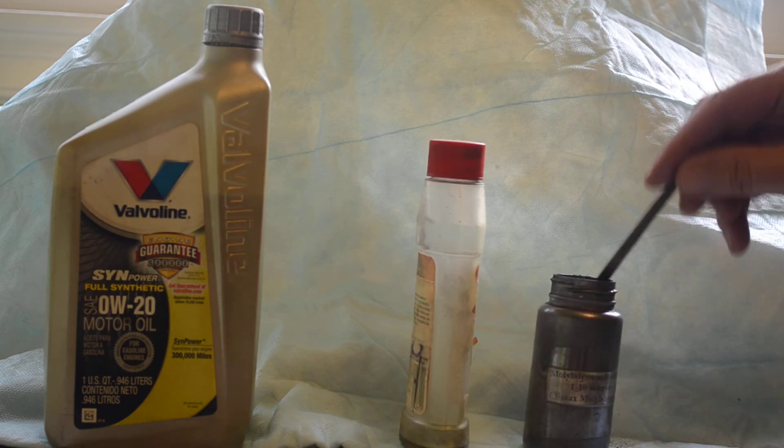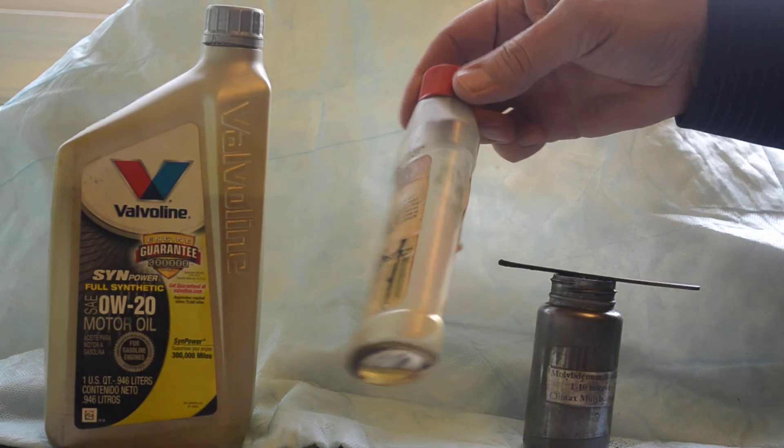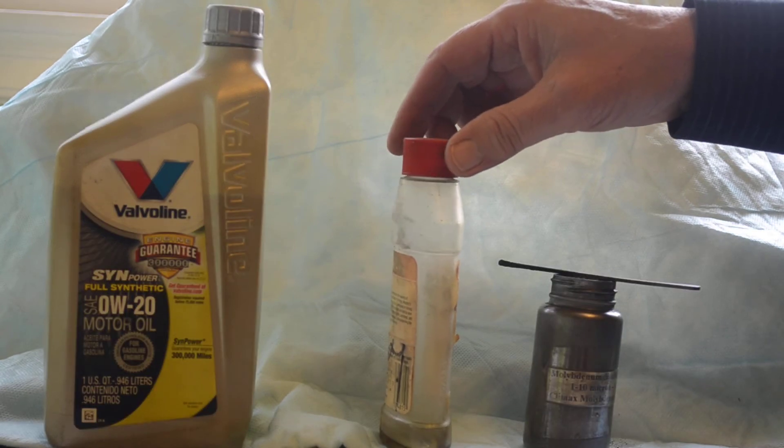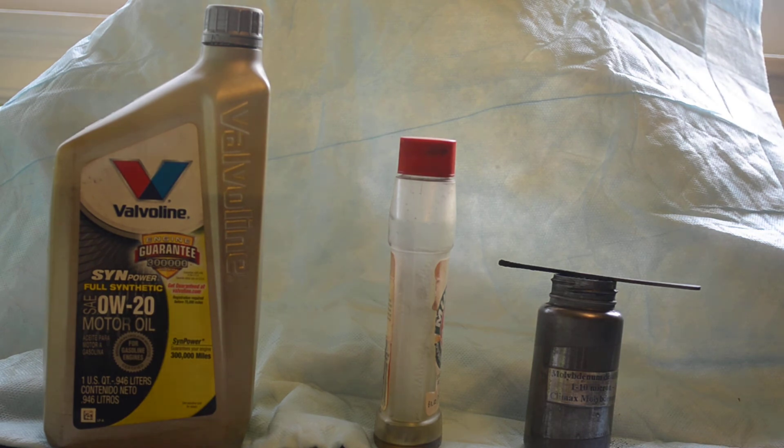What you do is you take that molybdenum and put it in a shaker jar. That's all this is, a shaker jar. I'll take diesel fuel or something that will mix with oil and fill it about half full, put the molybdenum in, then add it to a can of lightweight oil.